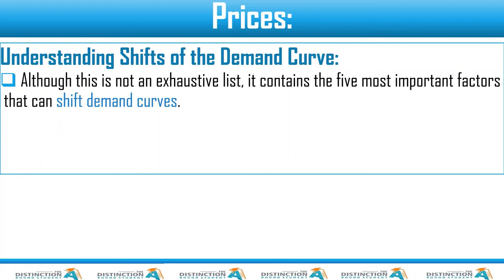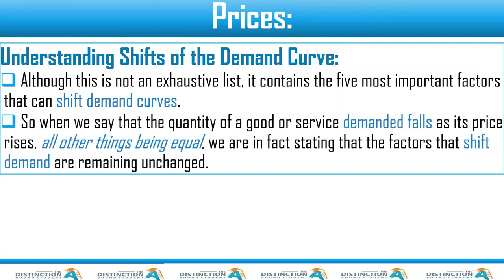Although this is not an exhaustive list, and you can come up with other factors that may cause an increase or decrease — if you have one, please put it in the comment section and let's discuss it, which will help us both improve. This contains the five most important factors that can shift demand curves. When we say that the quantity of a good or service demanded falls as its price rises, all other things being equal — ceteris paribus — we are in fact stating that the factors that shift demand are remaining unchanged.